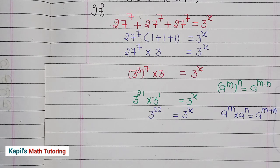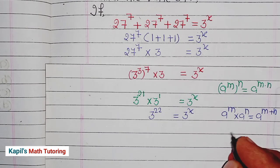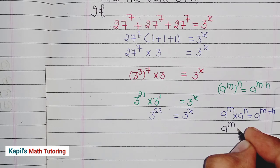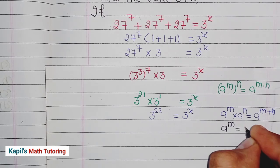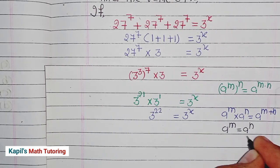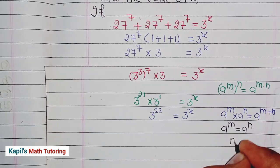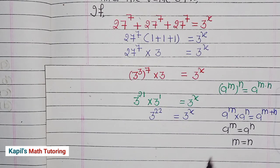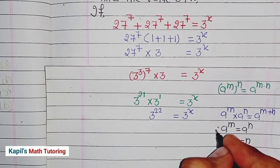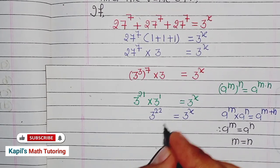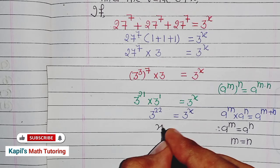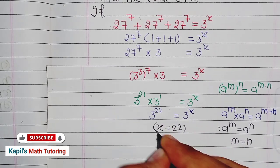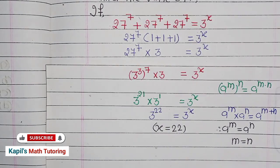Now I will use one more exponential property: when a to the power m equals a to the power n and the bases are the same, we can compare the powers directly, giving us m equals n. Applying this here, since the bases are the same, we get x equals 22, which is our final answer.